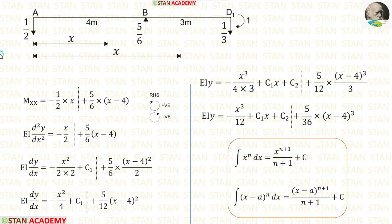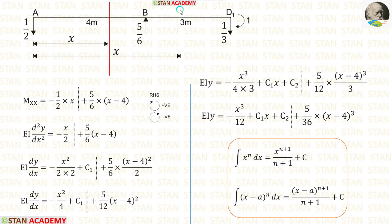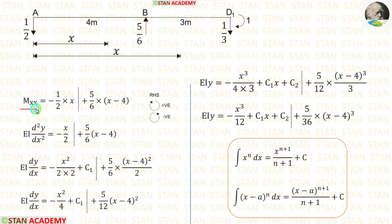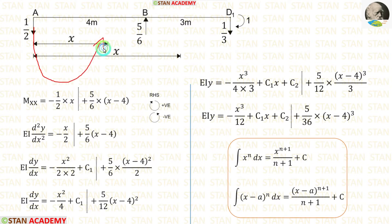In AD1, there are two different parts AB and BD1, so we have to make two sections: one section in AB and one section in BD1. We are making both sections from point A at distance X. Now let us calculate Mxx, that is the moment in the sections, calculated from point A moving towards the right-hand side. Clockwise will be positive and anticlockwise will be negative. RA is acting towards the section in the anticlockwise direction, so it will be negative and the distance is X, giving minus (1/2)·X.